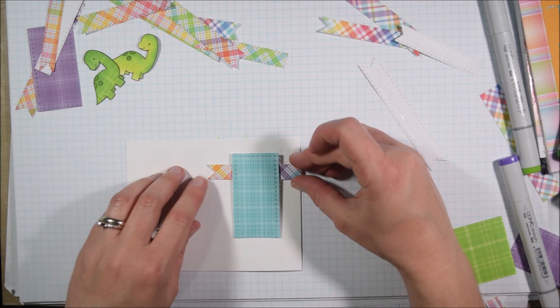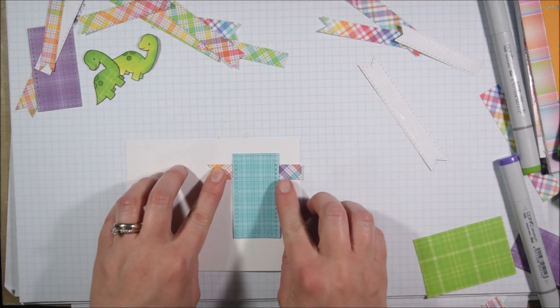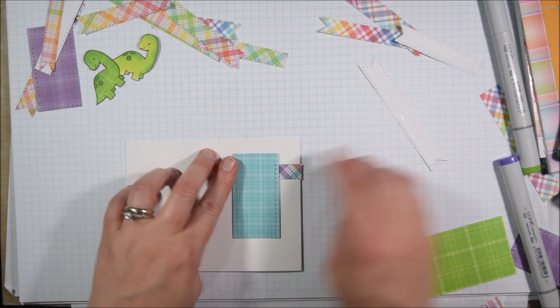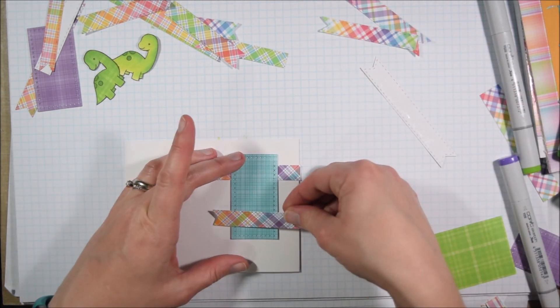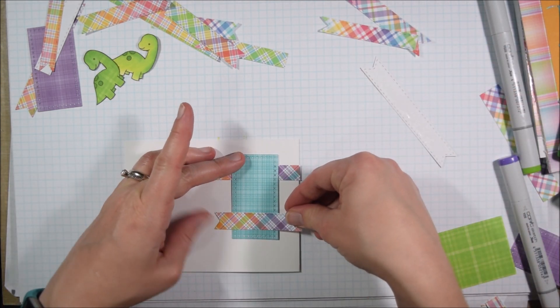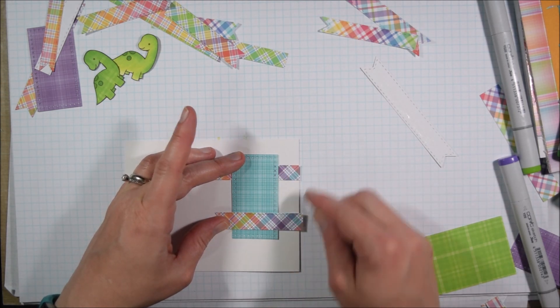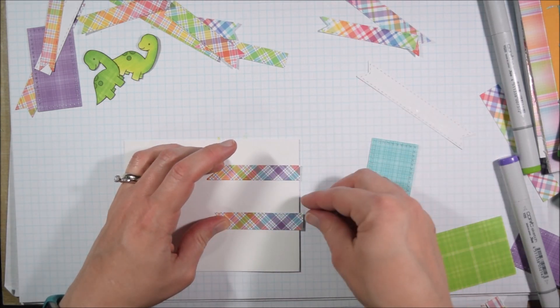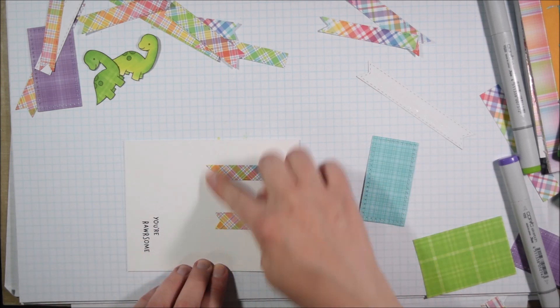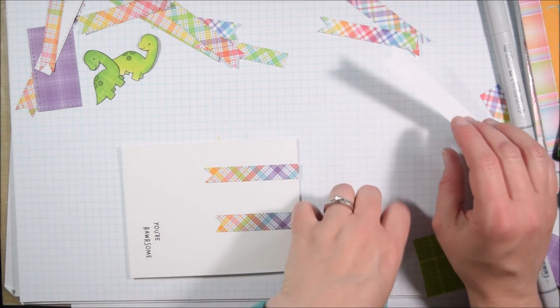That, to me, made things go the easiest. So I would think about that if you were trying to use up some scraps. Maybe picking a pattern paper line that has a whole bunch of different color semi-solids would make this a bit easier.